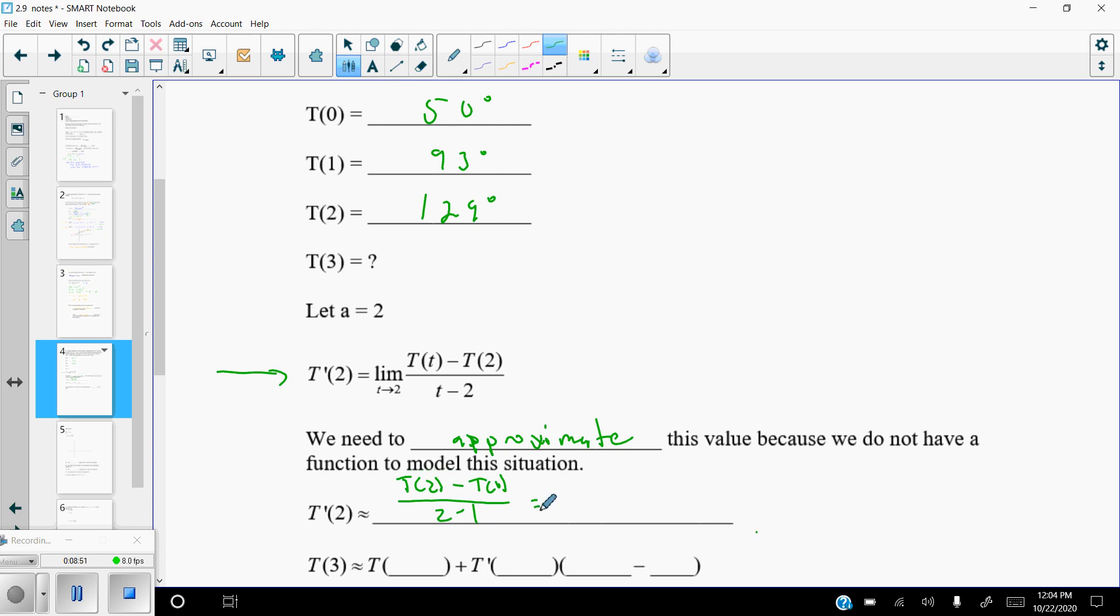It's the best approximation I'm going to be able to get with the information provided. So that's going to be, let's see, t of 2 was 129 degrees. t of 1 was 93 over 2 minus 1, which of course is 1. So 129 minus 93 is 36. So it looks like our rate of change or approximated slope is 36.